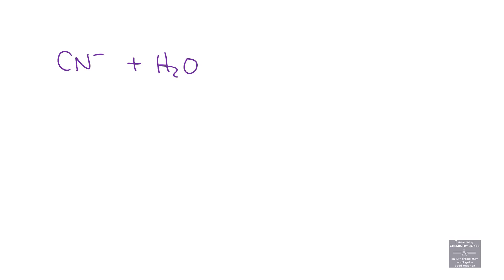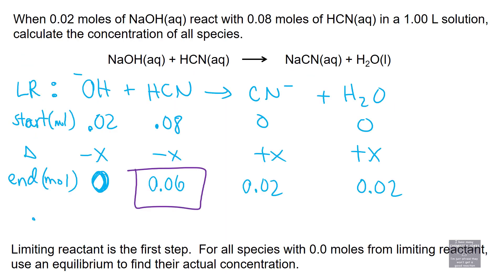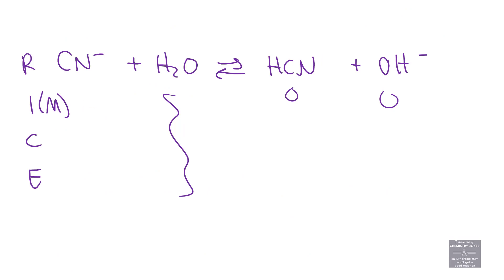Cyanide plus water creates, in an equilibrium process, HCN plus OH-. We're going to do a standard RICE table. RICE tables have molarity, not moles. That's not true this time - we have 0.06 moles of HCN in one liter solution, so that's 0.06 molar HCN, 0.02 molar cyanide, and no hydroxide.